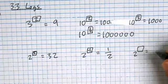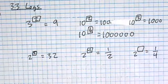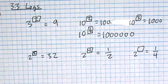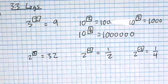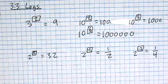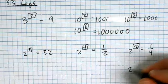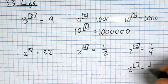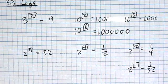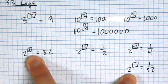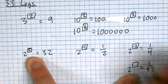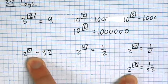What exponent could I put onto a two to make it one fourth? Negative two. How about a tougher one: what exponent could I put on a two to make it one over 32? These are related — the answer is negative five.